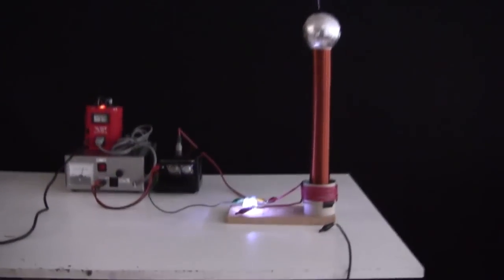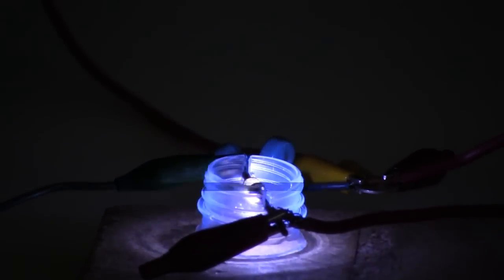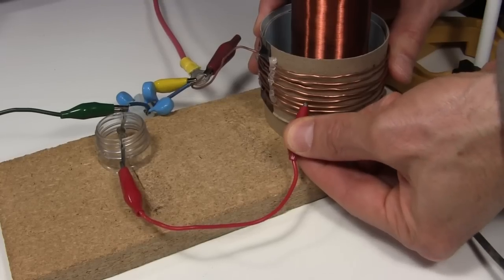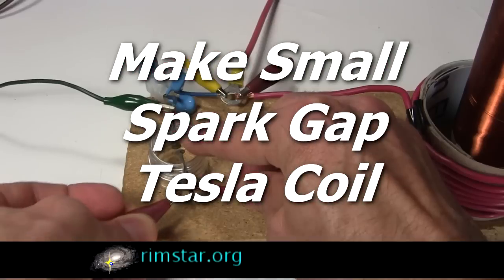Hi gang! Here's my small spark gap Tesla coil, so called because there's this spark gap here, as opposed to a solid state circuit. This one is also tunable for best results, to some extent. In this video I'll show you step by step how to make it and tune it.